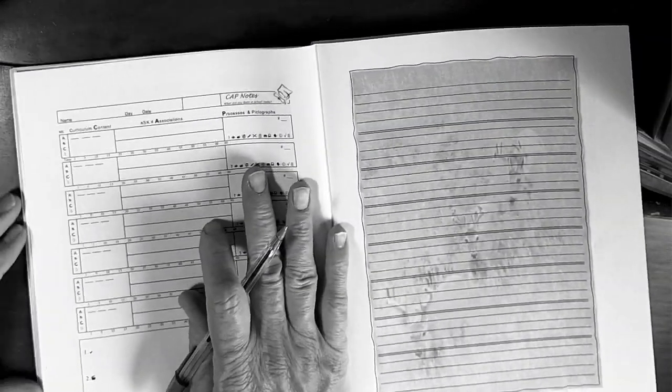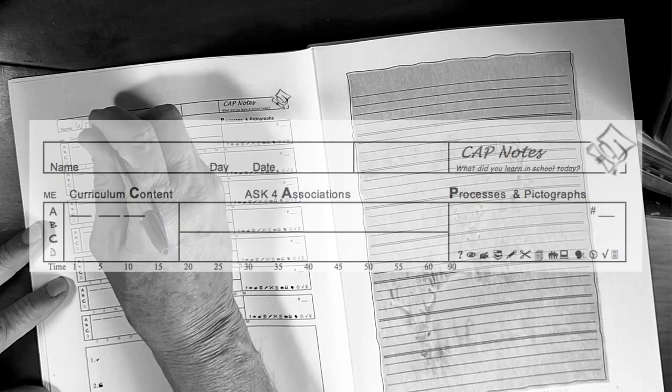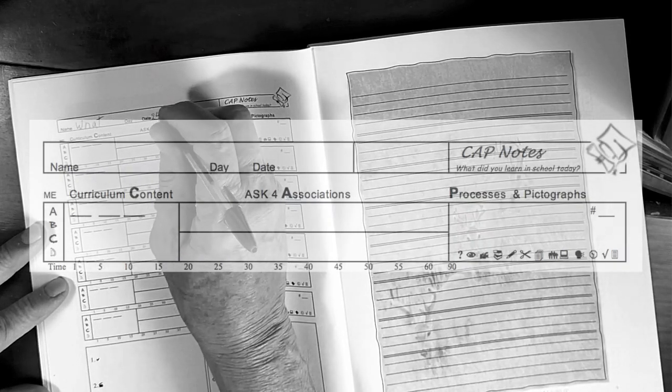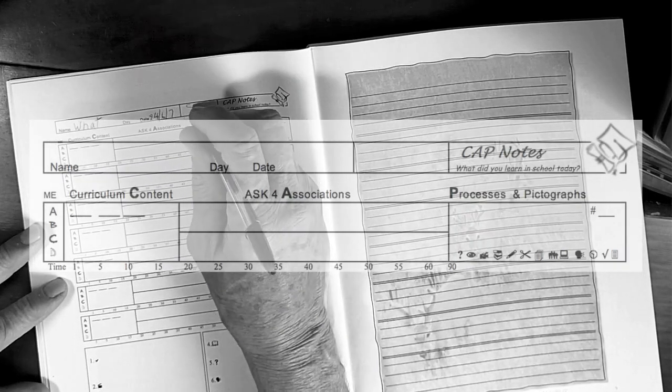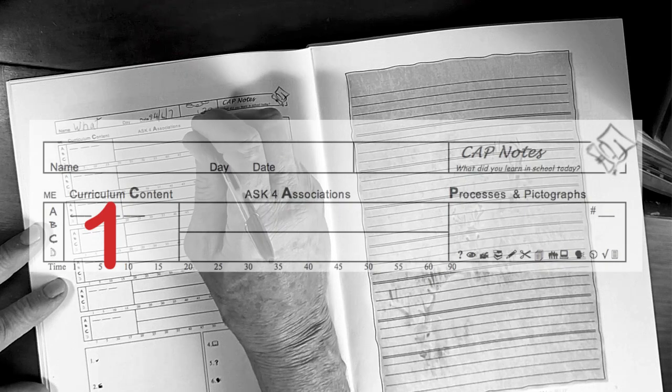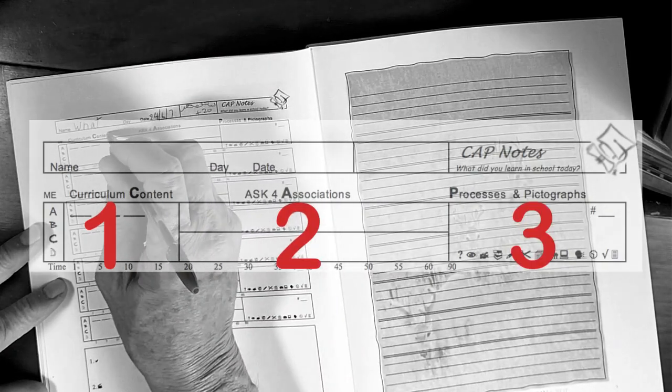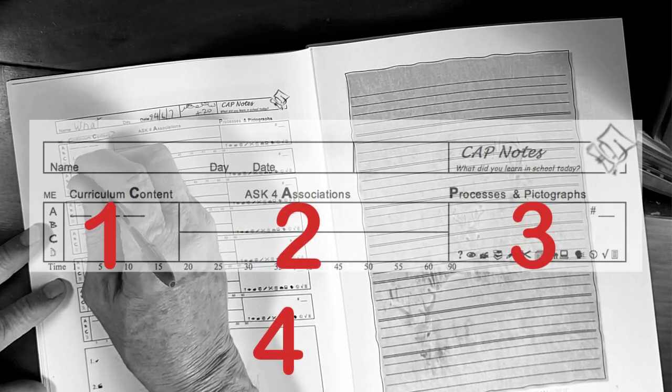Just as subjects are divided into core and non-core, a cap note has four core parts. They are the curriculum content, associations, processes, and Q&A sections.